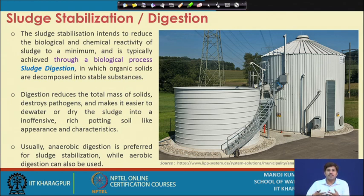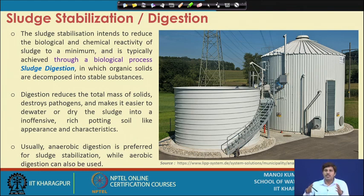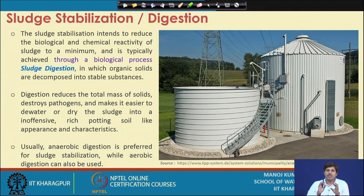In biological sludge stabilization, the organic solids are decomposed into stable substances, since those are the ones that are reactive and can convert to newer cell mass or other things within the sludge zone. So they are digested to form stable components. The digestion reduces the total mass of solids and destroys pathogens — so digestion can be considered a disinfection process as well. However, it is not always that effective in destroying pathogens. Thermal digestion will be more effective, but typical biological digestion may have some effect on killing pathogens, but cannot guarantee disinfected sludge.